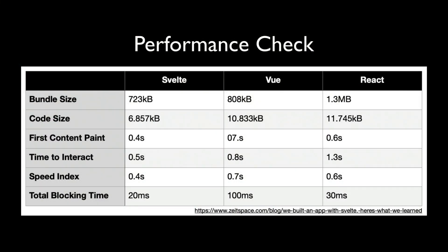Since Svelte is a compiler and therefore does not require a runtime system to be loaded into the client, it comes with several advantages. The first is performance — no runtime means faster load times. This can be demonstrated by creating three nearly identical web apps using different frameworks and comparing their Chrome Lighthouse performance results. Here we see that the app using Svelte ships the lowest amount of code, having a total bundle size of only 723 kilobytes compared to 808 for Vue and 1,300 for React. On top of shipping less code to the client, it also executes faster, performing slightly better than the other frameworks in all areas.